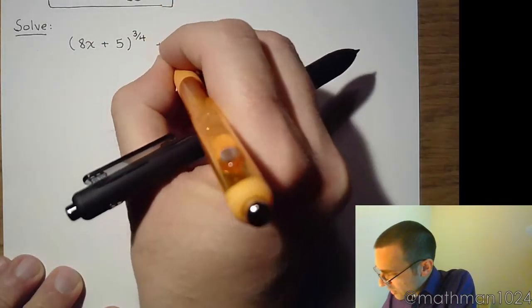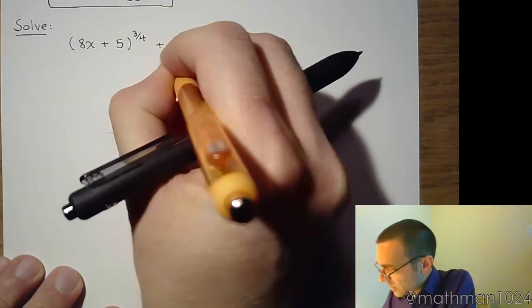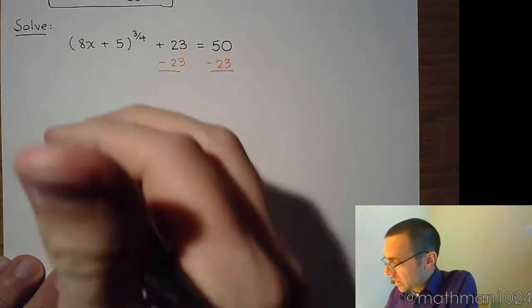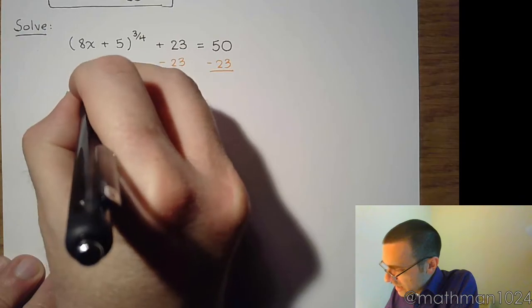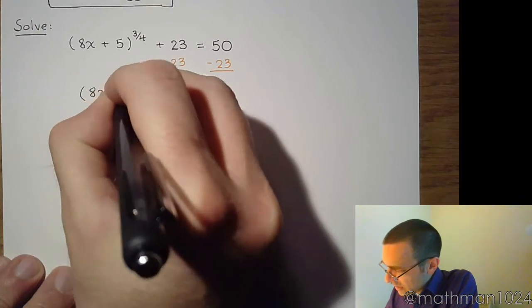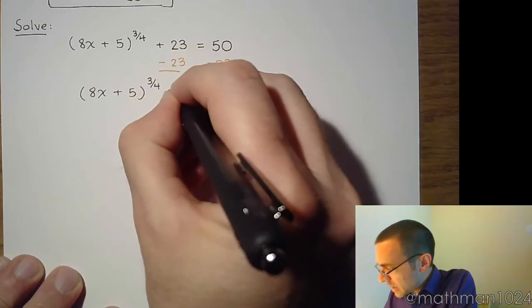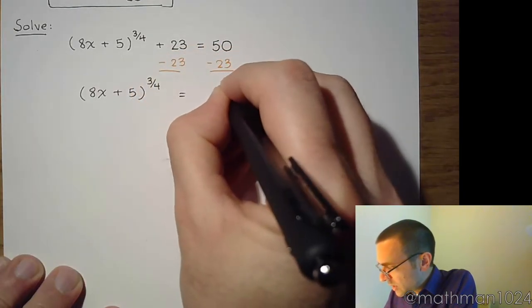So I'm first going to subtract 23 on both sides. All right. So that's 8x plus 5, that quantity raised to the 3 fourths power, is equal to 27.